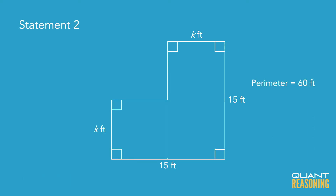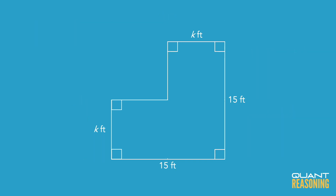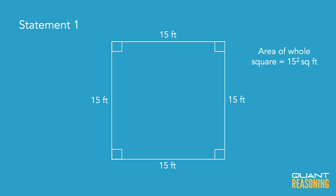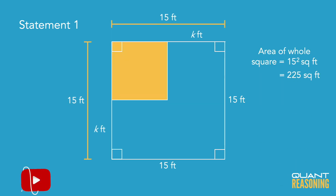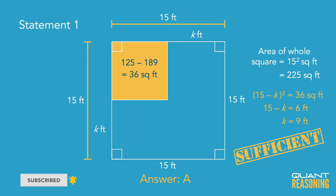Well, statement two just gives us the perimeter of the shape, but that perimeter is going to be the same for any value of k. Statement one gives us the area of the shape, and that's going to be quite large if k is large, and really tiny if k is very small. So statement one is sufficient on its own, and the correct answer is A.